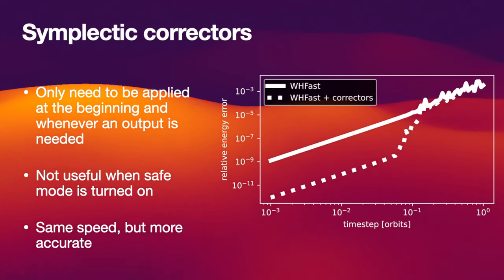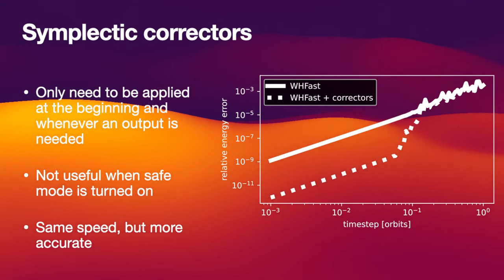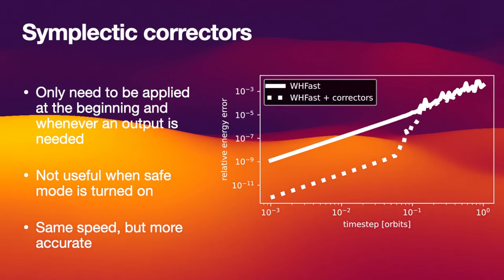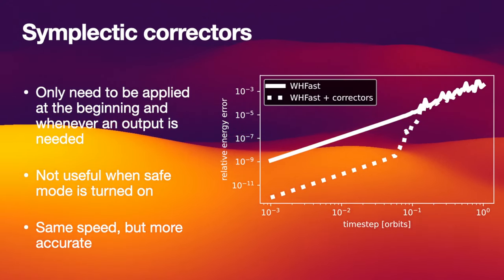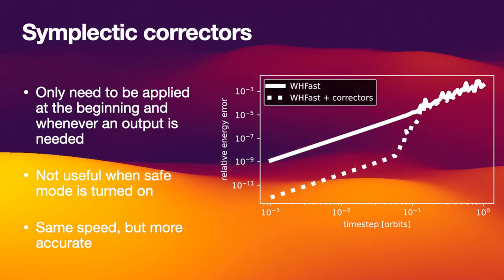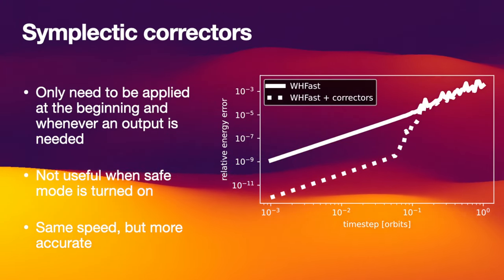For many exoplanetary systems with small mass planets, that ratio is even higher. So you get a factor of 1000 in accuracy gain using these symplectic correctors if you use sufficiently small time steps. Note that I'm using the relative energy error here as a metric for how good our integrations are. That's not the only metric you could use, but in general, all the metrics also agree that these symplectic correctors are a significant improvement.